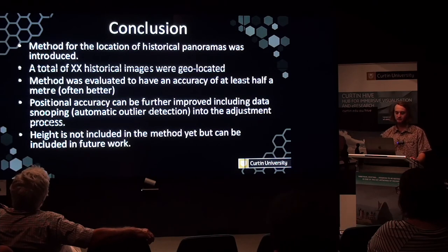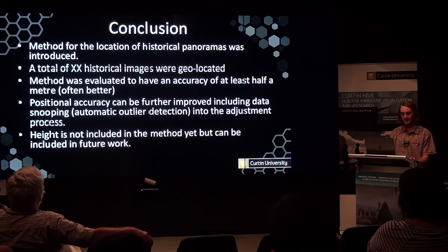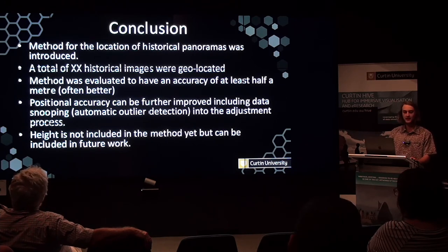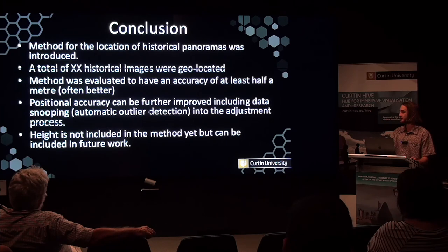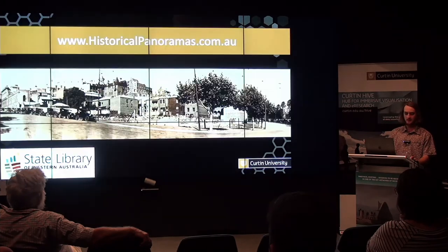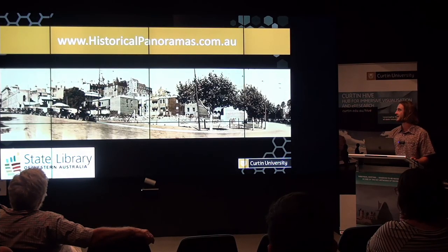In conclusion, a method for geolocating historical panoramas was introduced and a total of six historical images were geolocated. However, only one modern-day image was recaptured. The method was evaluated to have an accuracy of at least half a metre and often better in some cases. Positional accuracy can be further improved by including data snooping techniques for the automatic detection of outliers in the adjustment process. Future work could include this as well as incorporating height observations into the solution in order to determine a three-dimensional position. Thanks for listening. Please visit the website at historicalpanoramas.com.au.